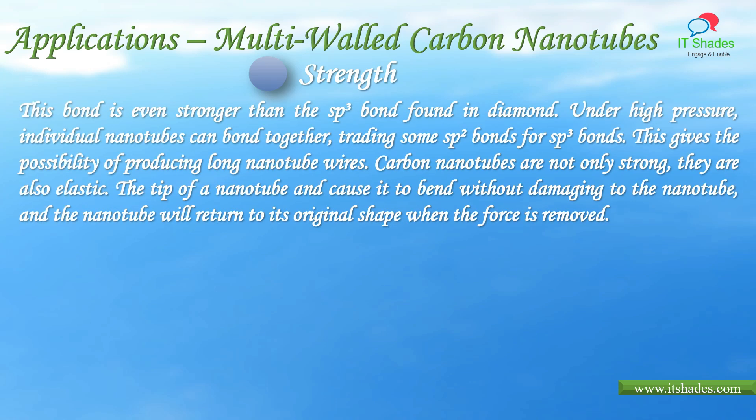Strength. The carbon–carbon bond in nanotubes is even stronger than the sp³ bond found in diamond. Under high pressure, individual nanotubes can bond together, trading some sp² bonds for sp³ bonds, giving the possibility of producing long nanotube wires. Carbon nanotubes are not only strong but also elastic — the tip of a nanotube can cause it to bend without damage, and it will return to its original shape when the force is removed.